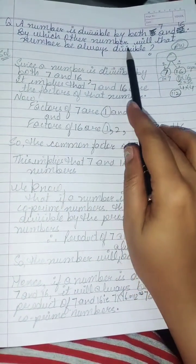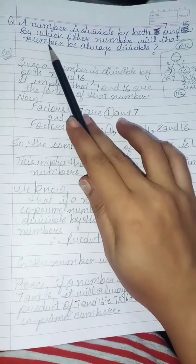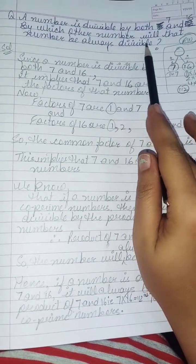The question is, a number is divisible by both 7 and 16, by which other number will that number be always divisible?